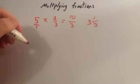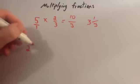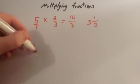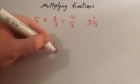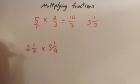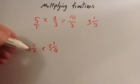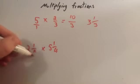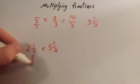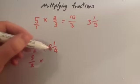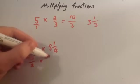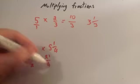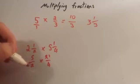Finally, sometimes you have to multiply together two mixed numbers. For instance, two and a half multiplied by five and a quarter. So make them both top-heavy fractions to begin with. Two times two is four, plus one is five, so that's five halves. Multiply it by — five times four is twenty, plus one is twenty-one quarters.